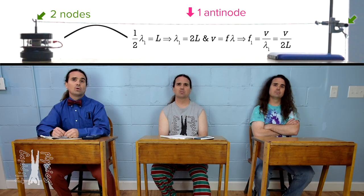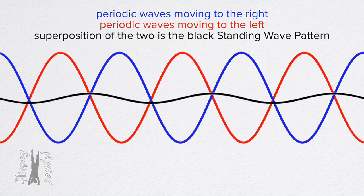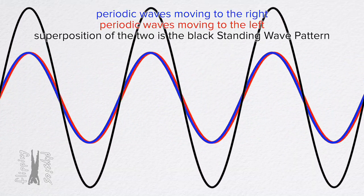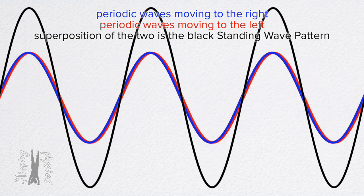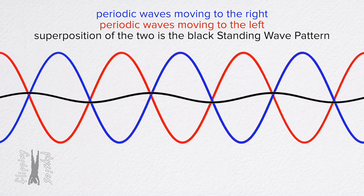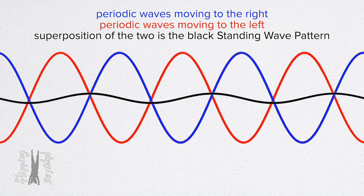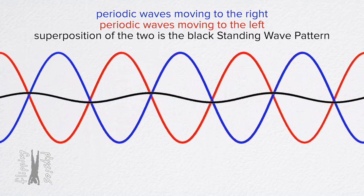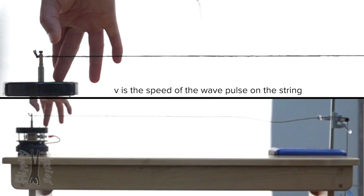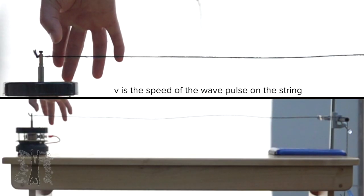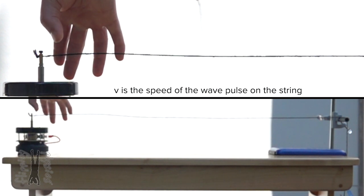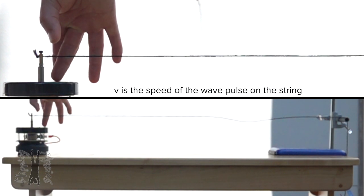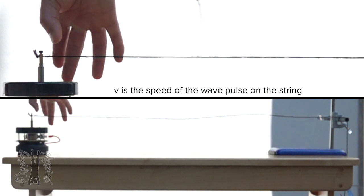What do you mean by the speed of the wave? The standing wave pattern is created by the constructive and destructive interference of the periodic waves which are moving through and being reflected in the string. We found the speed of a single wave pulse on a string, and that is the speed being referred to here — the speed of the wave pulse on the string.